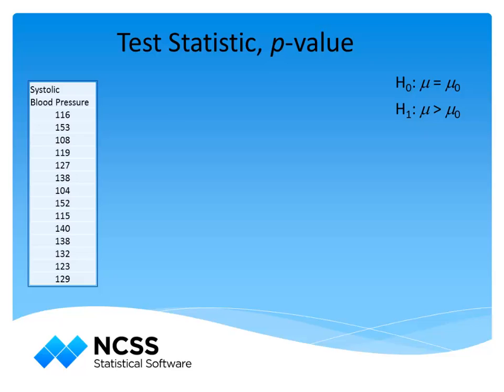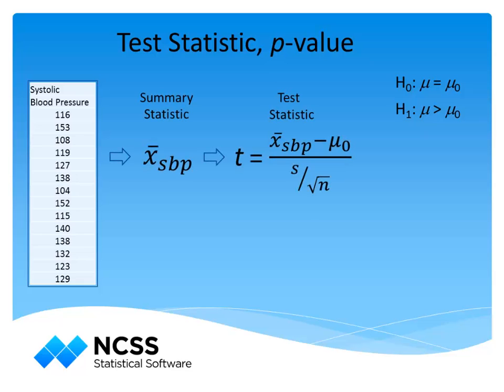The collected data are summarized by a single statistic about the parameter of interest. This statistic is commonly called the test statistic. The test statistic is compared to a known distribution of the possible values of the test statistic, assuming the null hypothesis is true. A p-value is calculated based on the test statistic, which reflects the probability of obtaining that test statistic or one more extreme if the null hypothesis is true. Small p-values indicate low probability of obtaining such a test statistic if the null hypothesis is true, and therefore evidence against the null hypothesis.